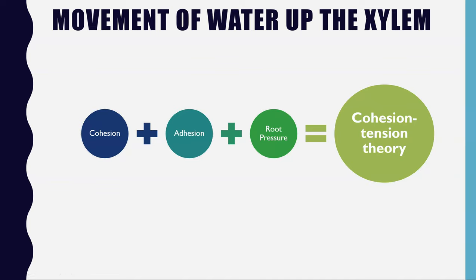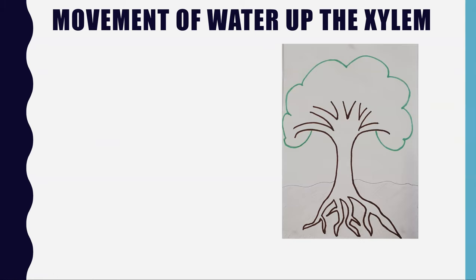So those three ideas collectively — cohesion, the sticking together of water molecules; adhesion, the water molecules sticking to the walls of the xylem; and positive root pressure pushing from the bottom — are all parts of explaining the cohesion tension theory. We will now put them all together and link them to the original question.